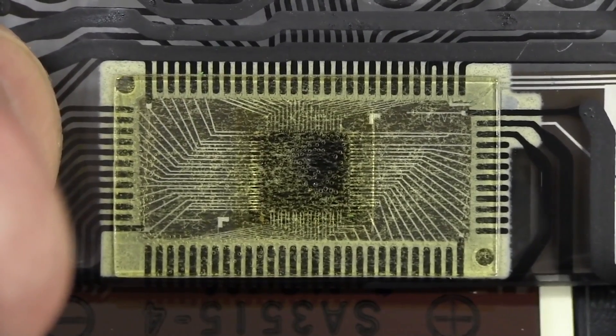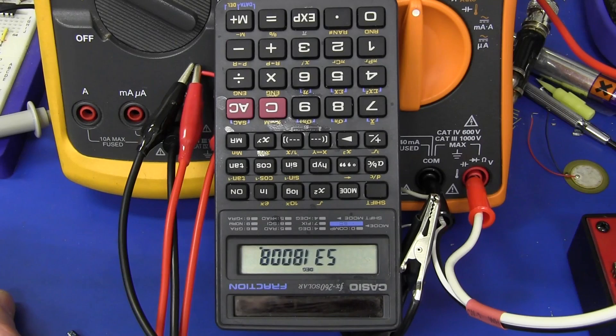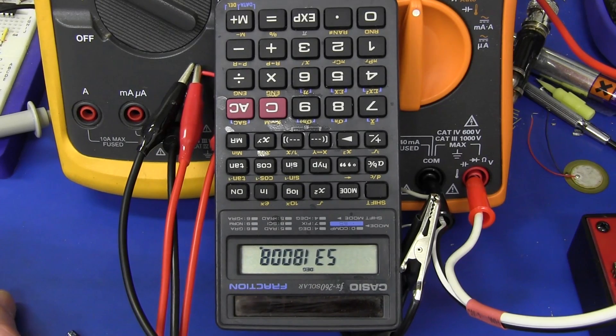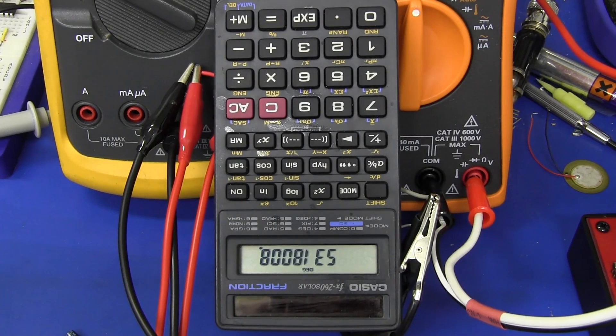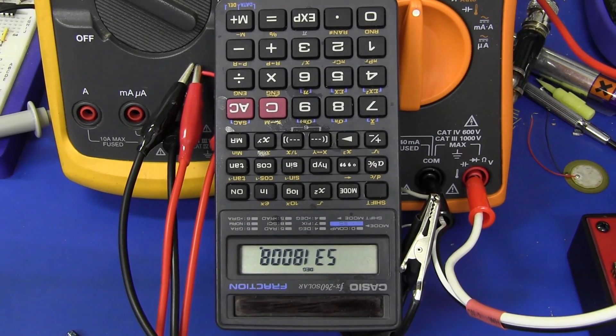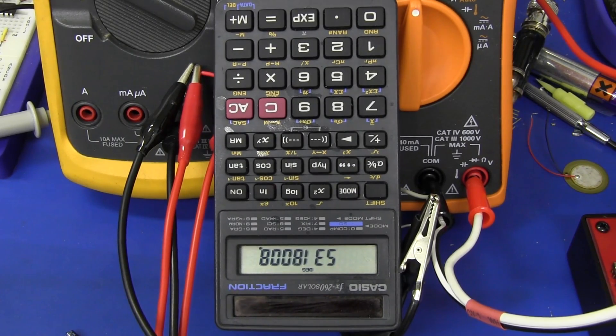So there you have it for this particular Casio FX260 solar calculator. Current draw ranges from in the order of two microamps up to fifteen or sixteen microamps. I expected a bit less than that actually. I'm a little bit surprised that it draws that much. But go figure. Anyway, little experiment I thought I'd share. Catch you next time. Bye.